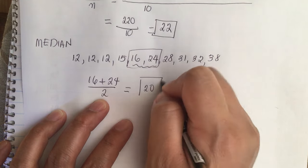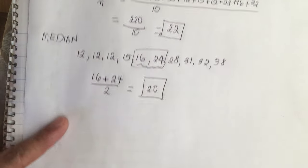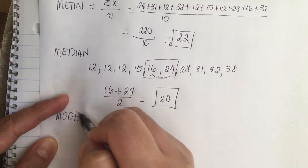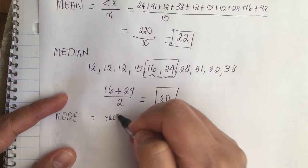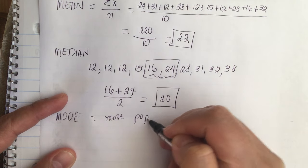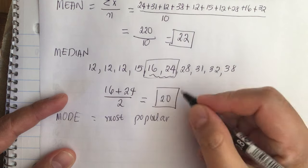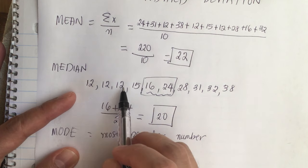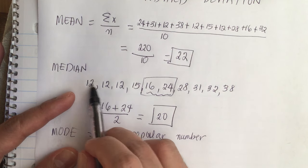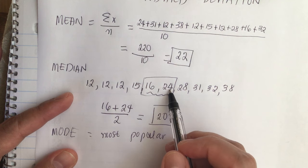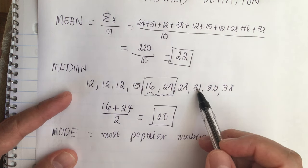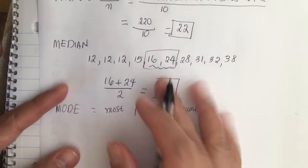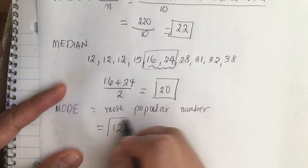For the mode, the mode is the most popular number. The most popular number is 12, because there are three 12s in the data set, while all other values appear only once. So the mode is equal to 12.